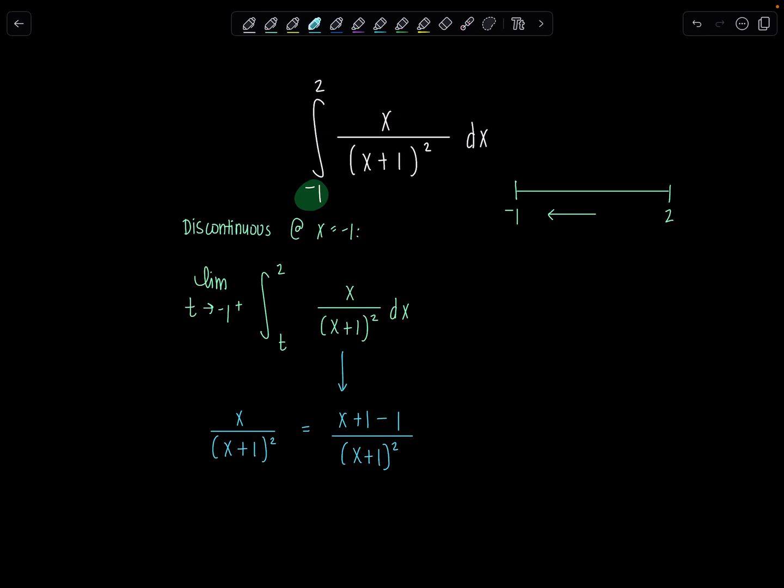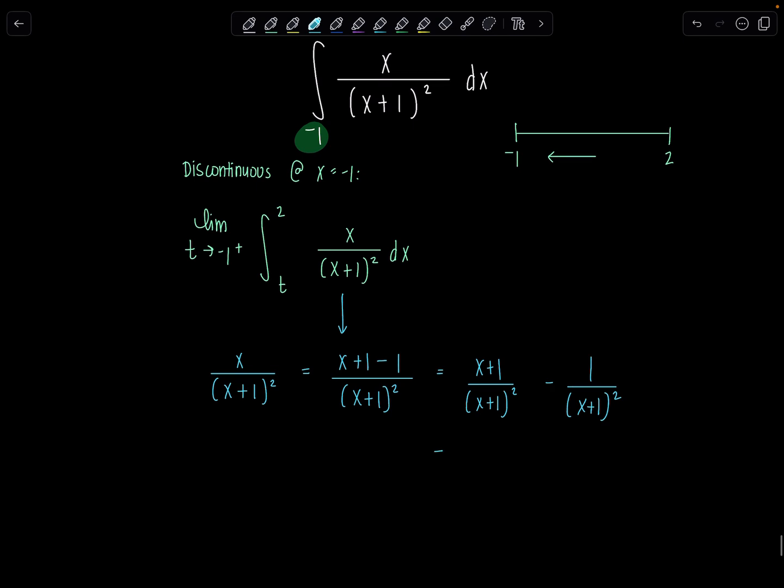So I can split this now. This is the beauty of what we just did into x plus 1 over x plus 1 squared minus 1 over x plus 1 squared. Are we okay? And then now this will simplify. I can cancel. And then I just have 1 over x plus 1 minus 1 over, that's right, x plus 1 squared.